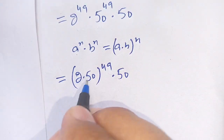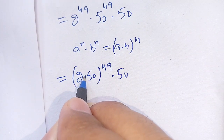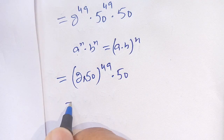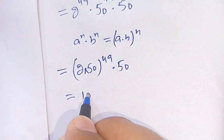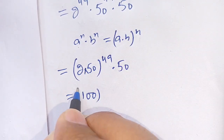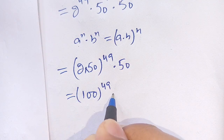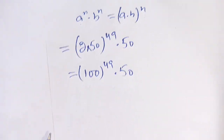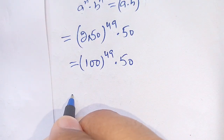Now 2 times 50 becomes 100, so we have 100 raise to power 49 times 50.